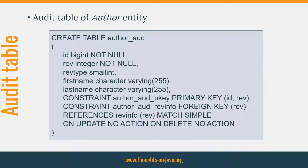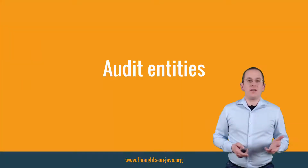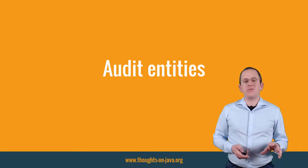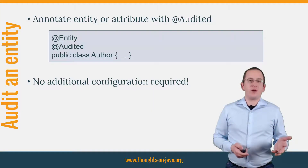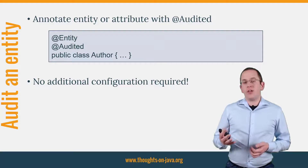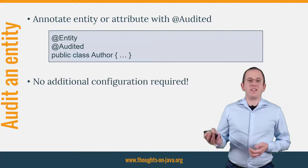Here you can see an example of the audit table for the Author entity. Now you're done with the setup and there's just one more thing you need to do. You need to tell Envers which entities you want to audit. You can do that by adding the @Audited annotation to your entity class to audit all attributes, or just to the entity attributes you want to audit. Let's get into the IDE and give it a try.